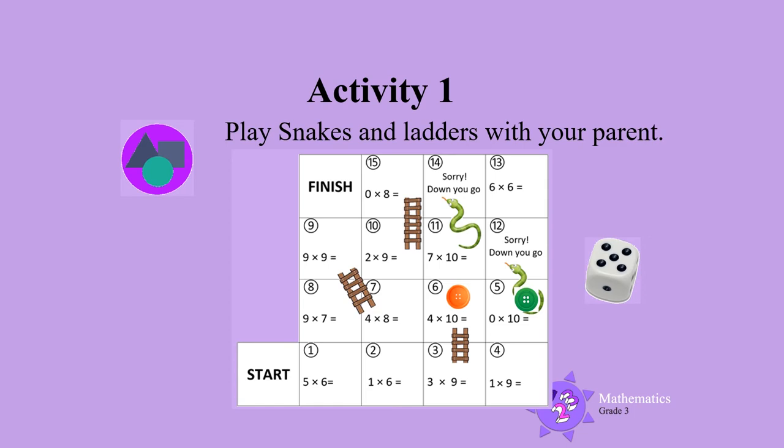Your parent cannot move to block 5. They must stay where they were when they threw the dice. This means that they must go back to the start.